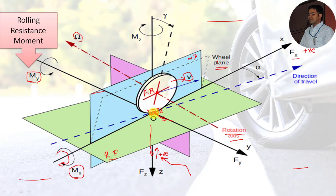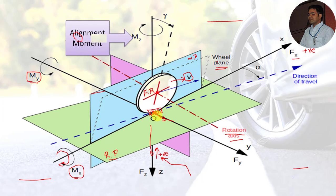We are considering all the effects of forces and moments about the center of tire contact. The next term is alignment moment — the moment acting on the tire produced by the road which is normal to the plane of road. This is known as the alignment moment.